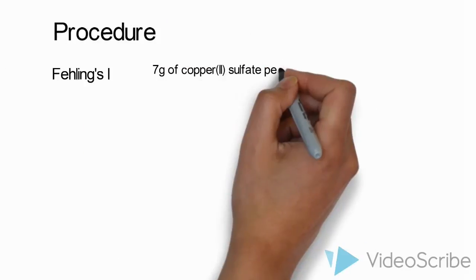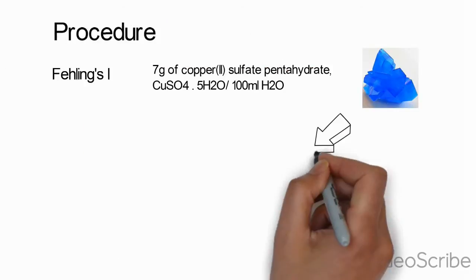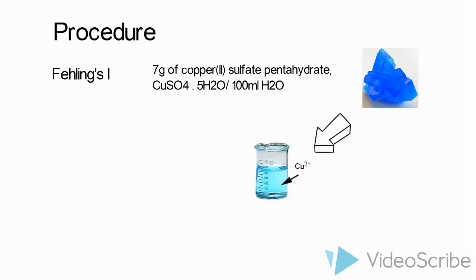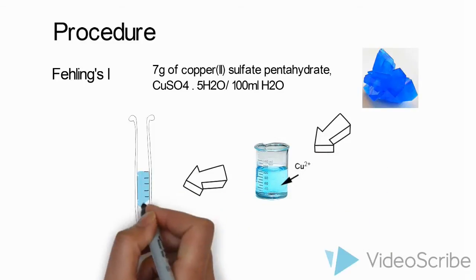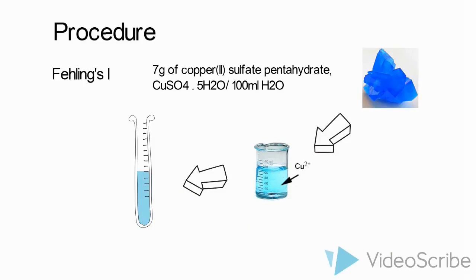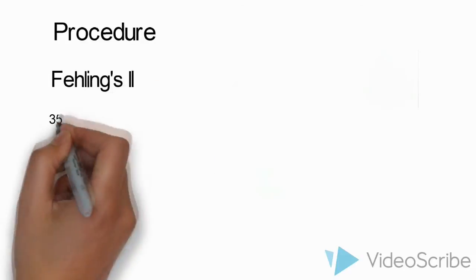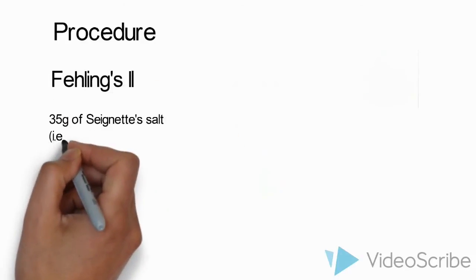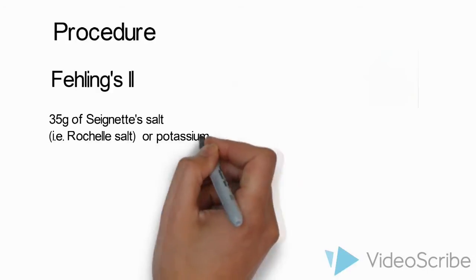Fehling's reagent is always prepared fresh in the laboratory. Fehling's 1 is a light blue aqueous solution of copper 2 sulfate pentahydrate crystals, while Fehling's 2 is a colorless solution of aqueous potassium sodium tartrate and a strong alkali.